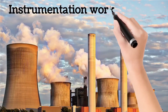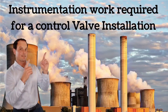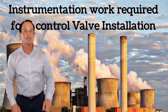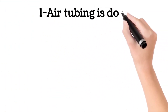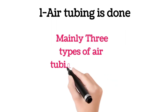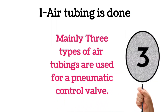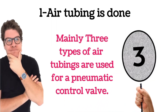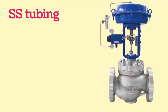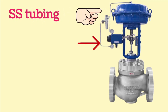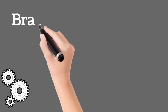Let's discuss the instrumentation work required for control valve installation. First of all, air tubing is done. Mainly three types of air tubings are used for a pneumatic control valve. The first type of tubing is SS tubing. SS means stainless steel. This tubing is shown by the arrow. The second type of tubing is brass tubing. In the image, brass tubing is shown by the hand arrow.